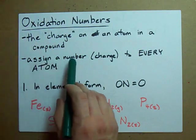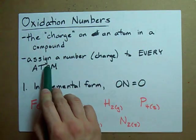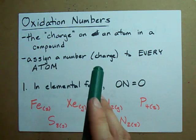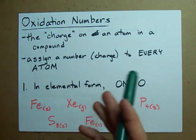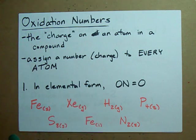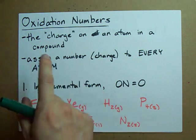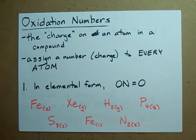We assign a number to every atom to figure out whether or not it has more or less electrons than it did when it started. You need to be able to assign these numbers so that you can figure out whether or not things were oxidized or reduced.